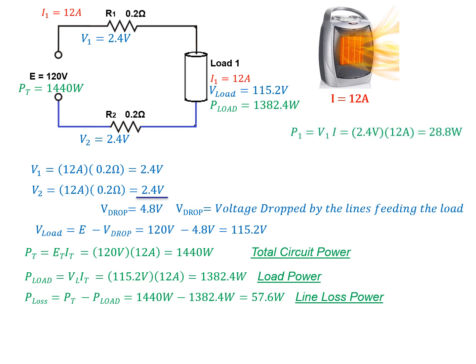We could also calculate how much heat or power is being dissipated in the wires by simply multiplying the current through the wire by the voltage drop of the wire. In this case, each wire is going to dissipate 28.8 watts for the total of 57.6 watts of line loss.